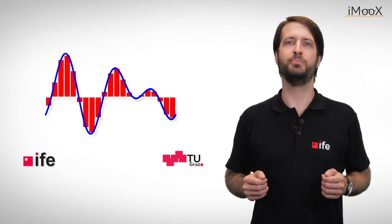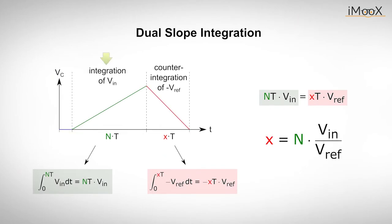Let's start with one of the first high resolution converter techniques in history that still enjoys great popularity. It's called dual slope integration. The idea is to integrate the input voltage VIN over a fixed period of time. This time can be measured as a number of clock cycles with the period T. After a known number of clock cycles, the circuit starts a counter integration with a reference voltage VREF until the voltage at the capacitor again reaches zero. This will take an unknown amount of clock cycles with the same period T. If we count the number of clock cycles X during the counter integration, the reading of X will be proportional to the input voltage VIN and can be used as digital output value.